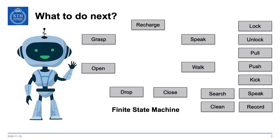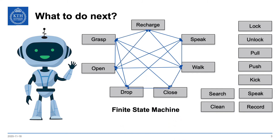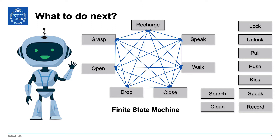Using a finite state machine to answer the question of what to do next, your setup would look like this. You have a bunch of actions and then you add transitions in between those and rules for when to make these transitions. The problem is there's going to be a lot of transitions to consider, and each action needs to know what to do next — what other action to transition to. That question is very hard and you need to get it right for all the transitions of all the actions.